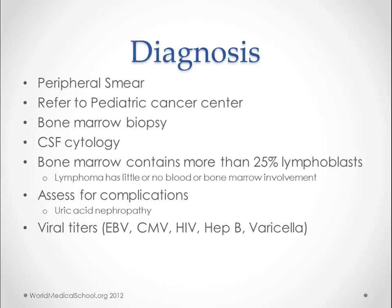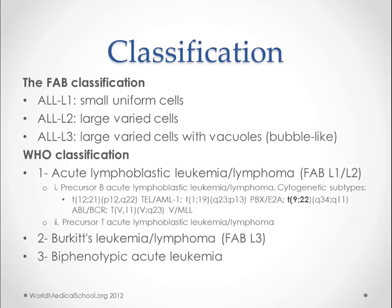They'll also be tested for viral titers like EBV, CMV, HIV, etc., because they're in an immunocompromised state or will be soon under treatment. The FAB classification — French-American-British classification — is pretty simple and is probably still the one tested on in the short term, though there is suggestion that we may abandon it altogether at some point.